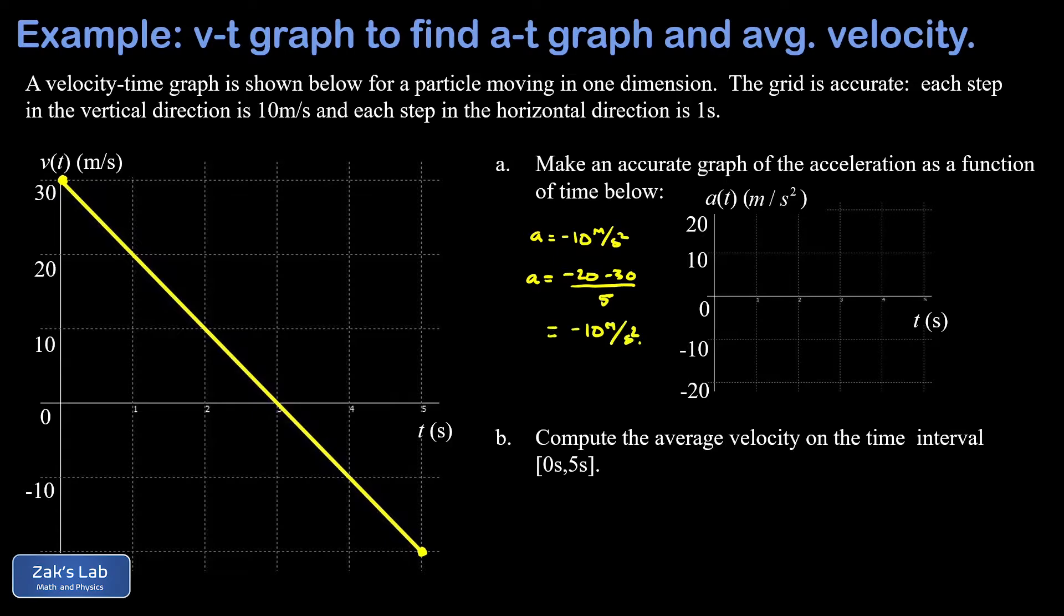Now, that acceleration function is a constant because the slope of the velocity function is a constant. So when we plot it on this acceleration-time graph, it's just a constant horizontal line at negative 10 meters per second squared.